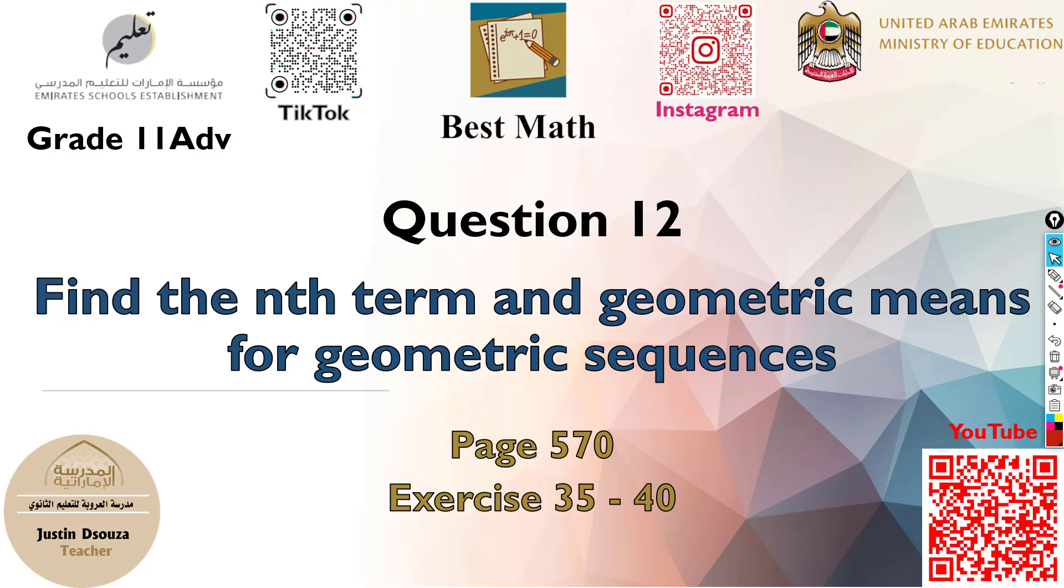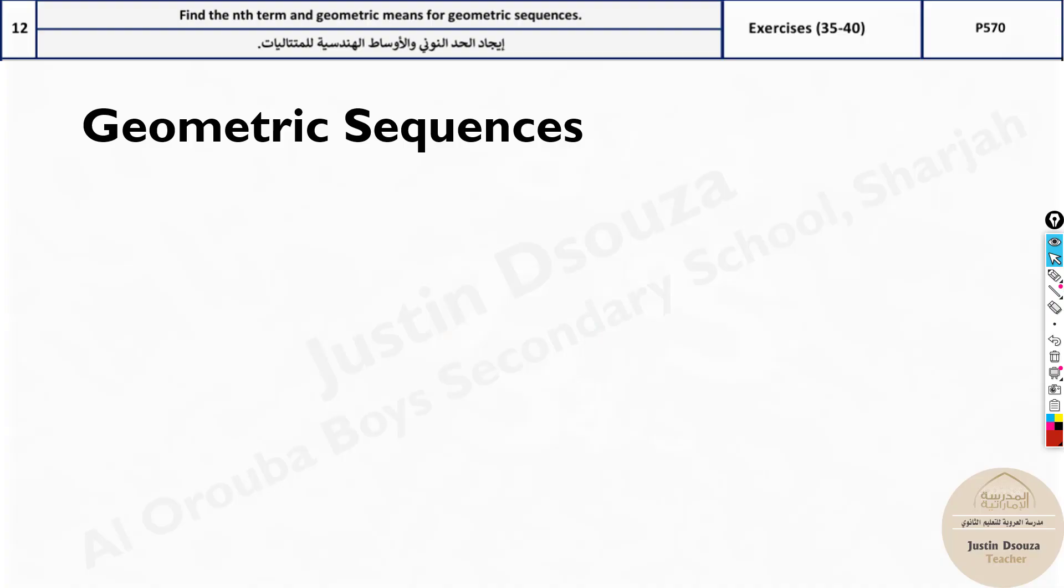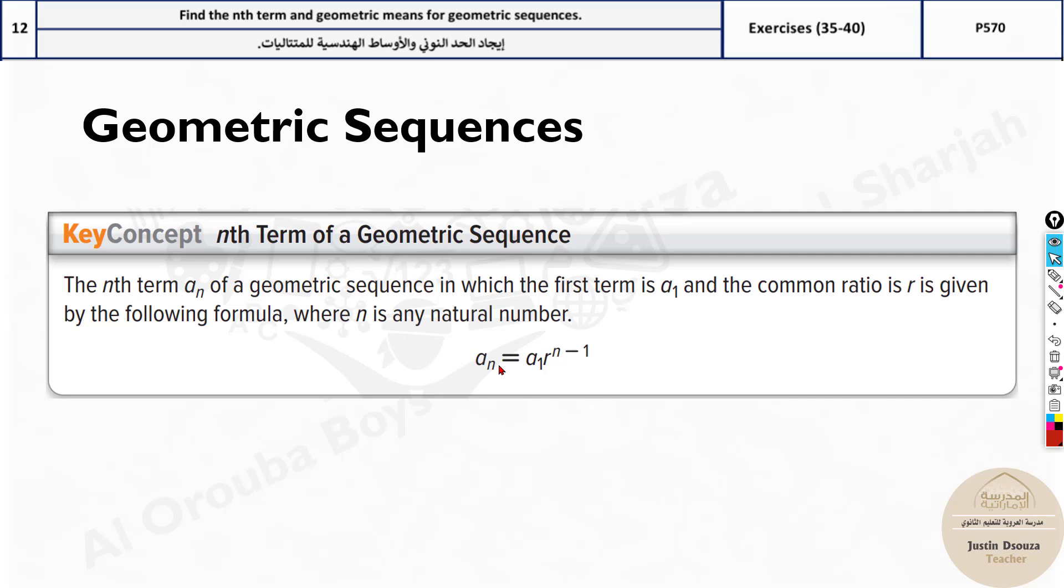The question is about geometric sequences. We have to find the nth term and geometric means. The geometric sequences formula is a_n equals the first term multiplied by r^(n-1). You might find this similar to the arithmetic sequence, but there it was all about plus. Here you multiply because geometric means you're multiplying the number. This r is the common ratio, a_1 is the first term, nth term, n is the number of terms.